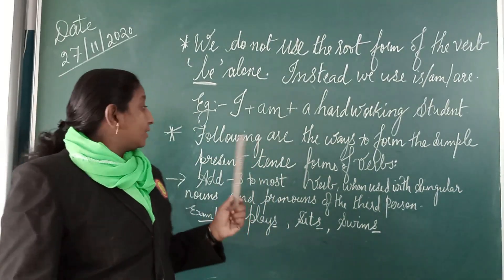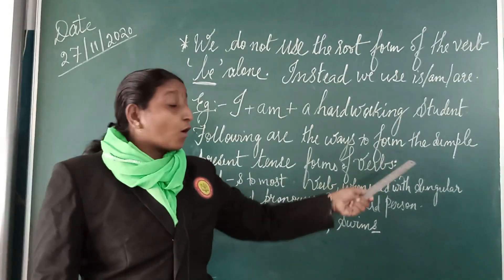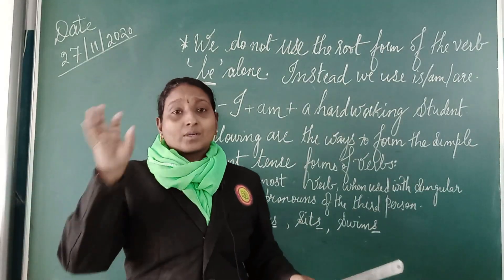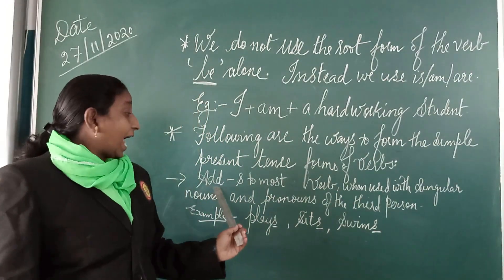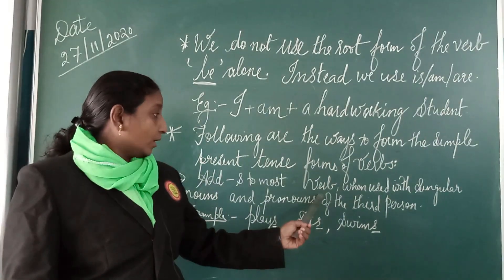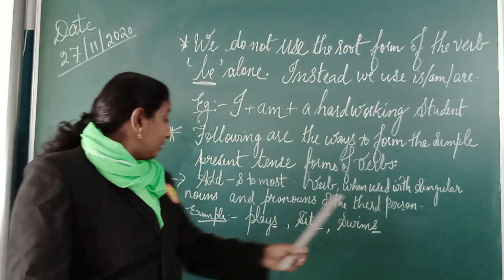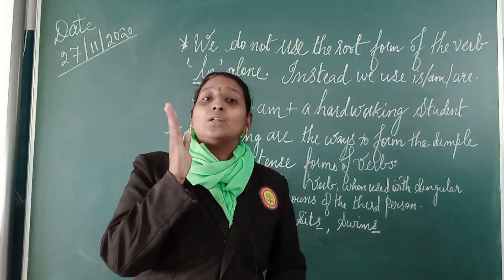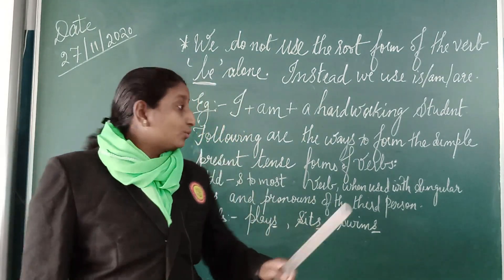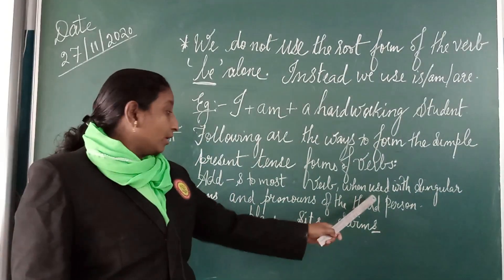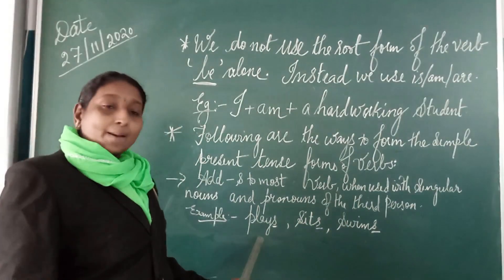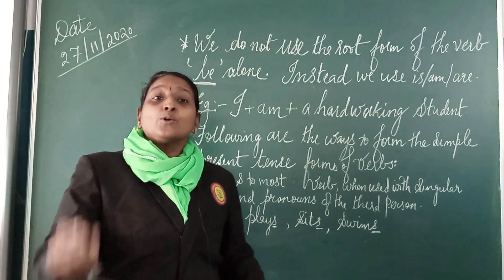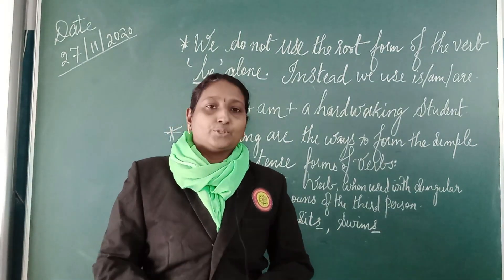The following are the ways to form simple present tense verb forms. To make a sentence, the first rule is: add S to most verbs when used with a singular noun or pronoun. Whenever there is a sentence with a singular noun or pronoun, we always add S to the verb form of the third person. For example: 'place' becomes 'places,' 'swim' becomes 'swims.'